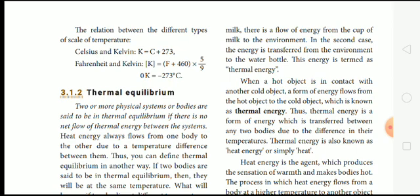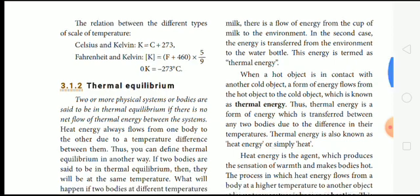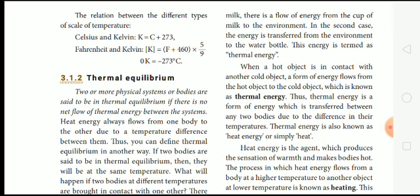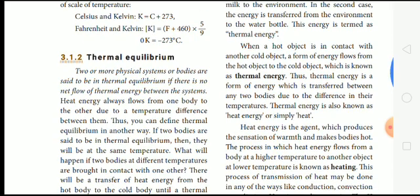For Fahrenheit and Kelvin, Kelvin equals 5 by 9 times (F - 32) plus 273. Zero Kelvin equals minus 273 degrees Celsius.